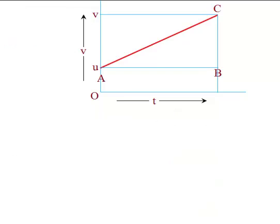In summary, all three equations of motion can be derived from the velocity-time graph. The slope of the VT graph gives acceleration, and for uniform acceleration the VT graph is a straight line. The area under the curve gives displacement of the body.